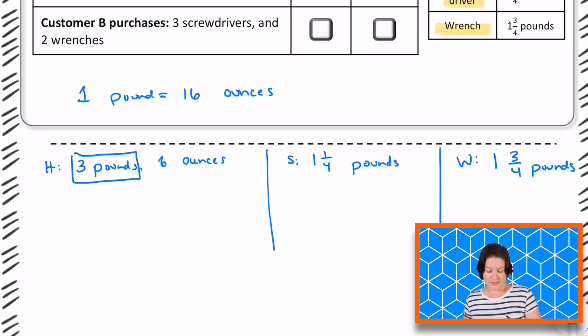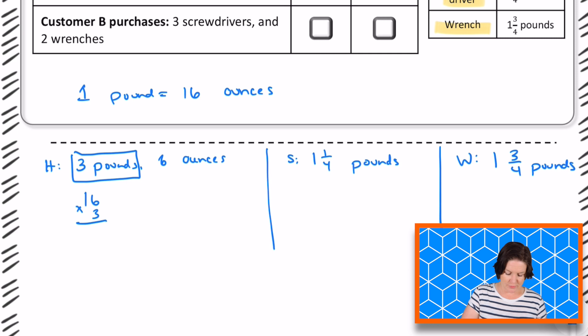If 1 pound equals 16 ounces, 3 pounds would be three times that. So we're taking 16 times 3, which would be 48 ounces, plus we also have 6 ounces that the hammer weighs too. Alright, so this would be a total of 54 ounces for just the hammer.